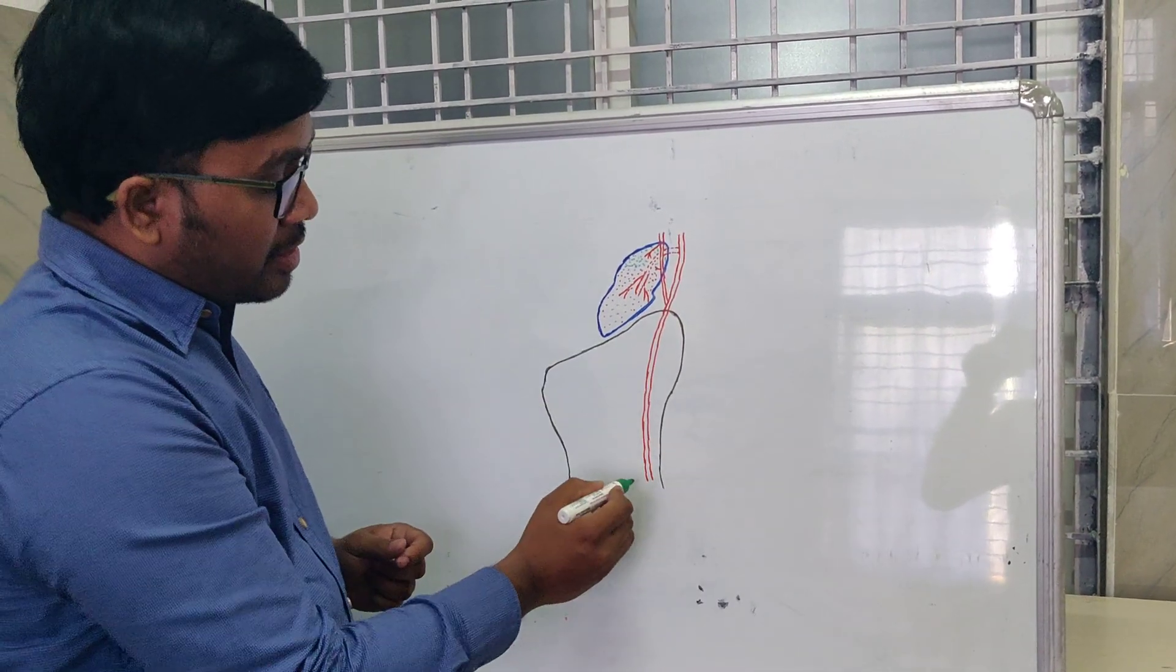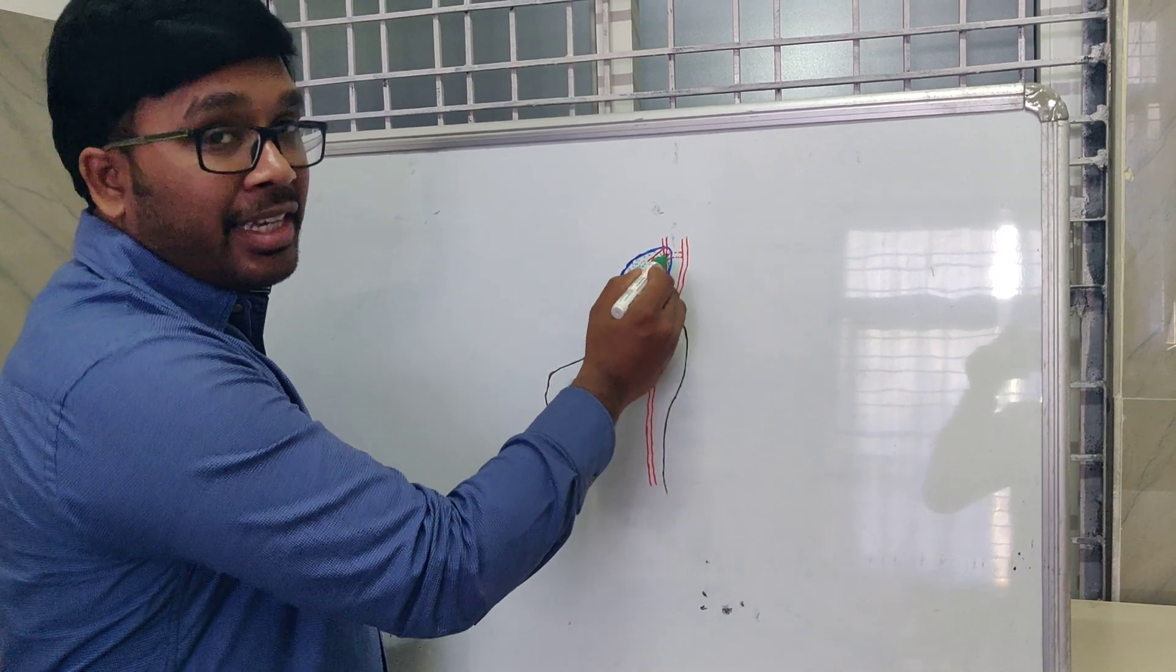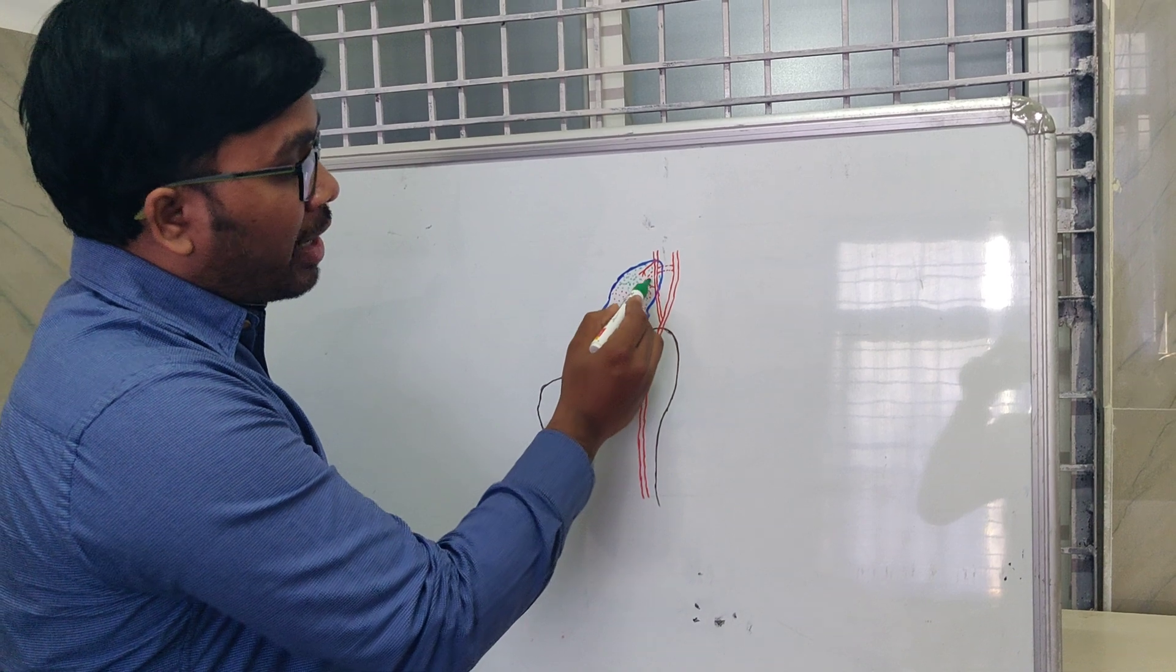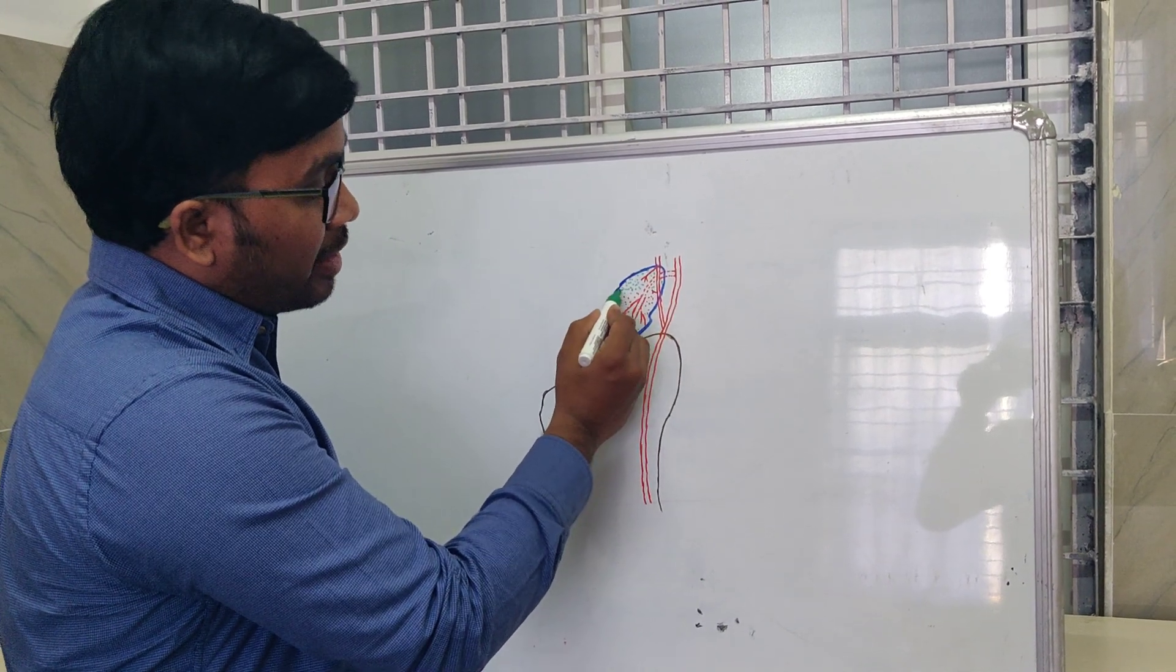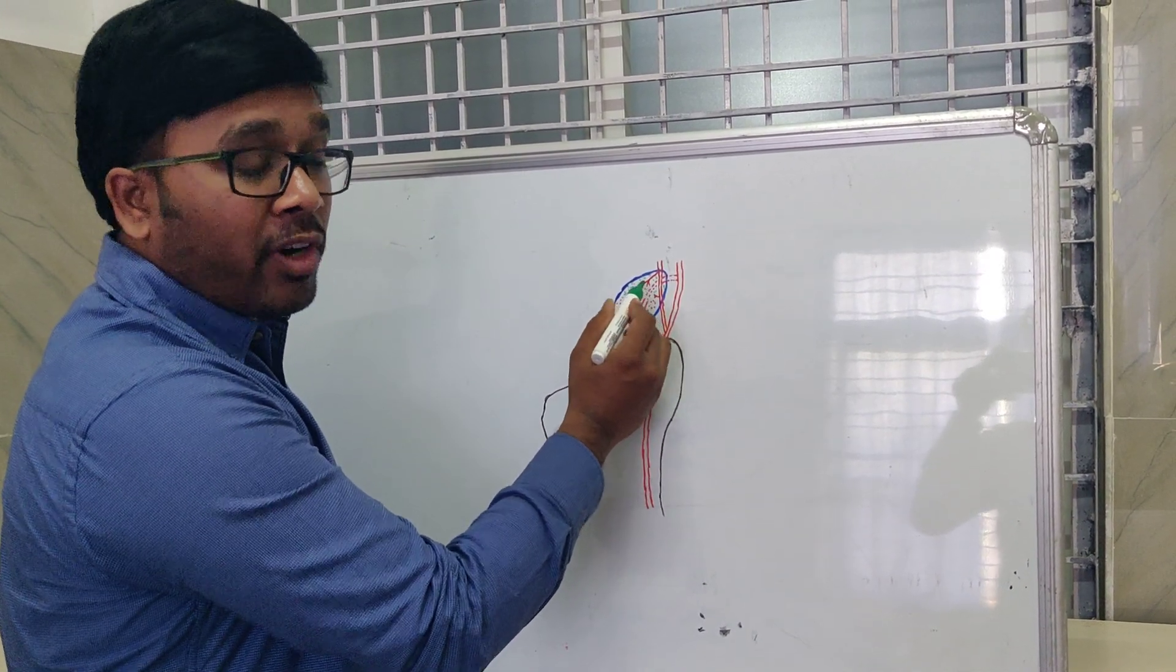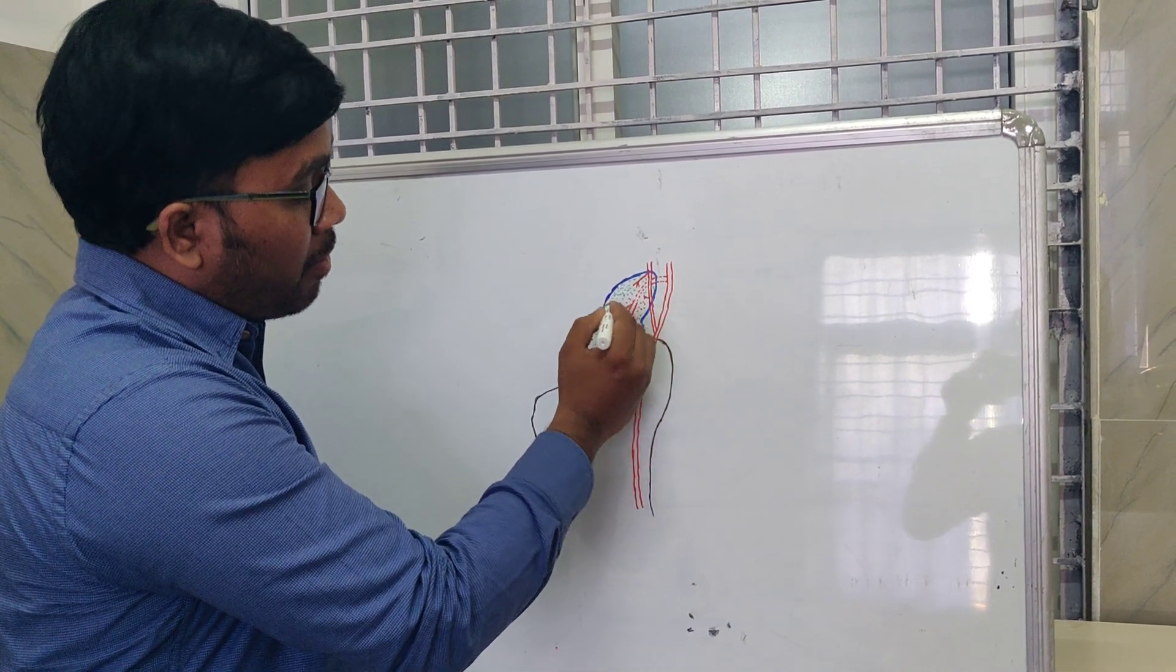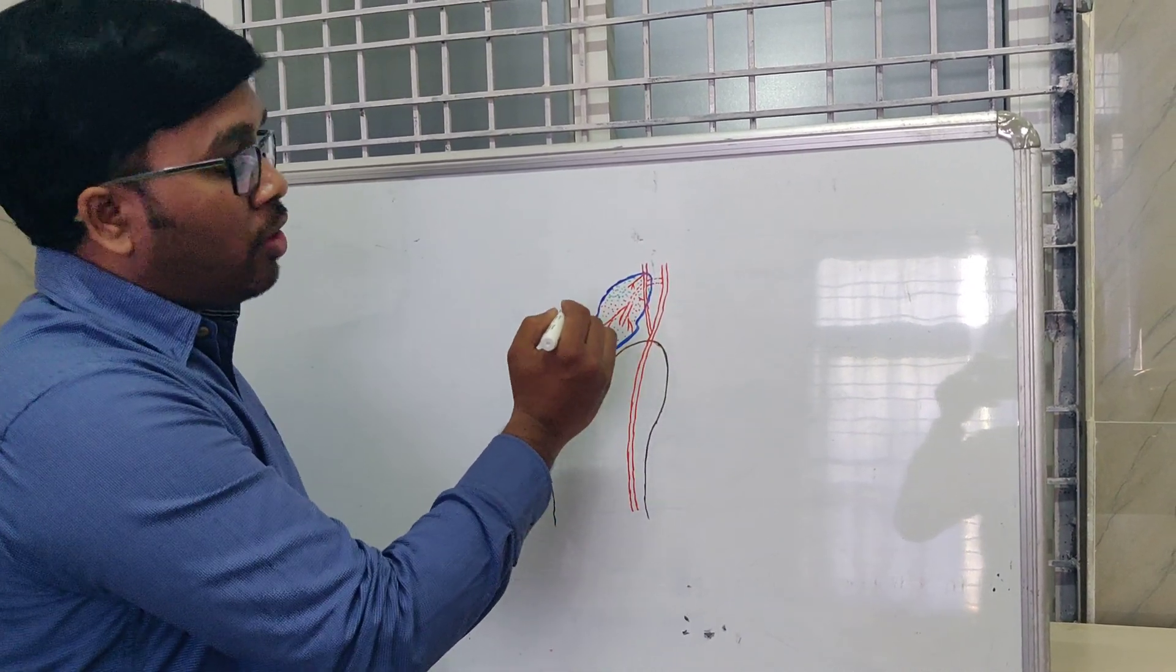This scaphoid is supplied by the radial artery via two branches. First is a volar branch which supplies the distal 20% of the scaphoid. Next is a dorsal branch which supplies the proximal 80% of the scaphoid.